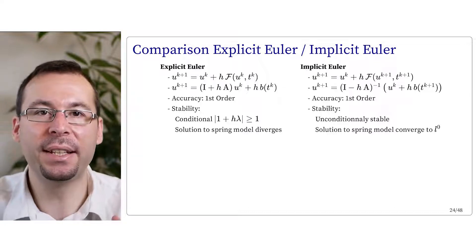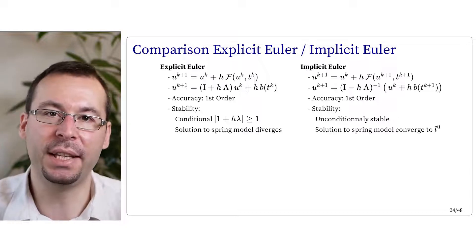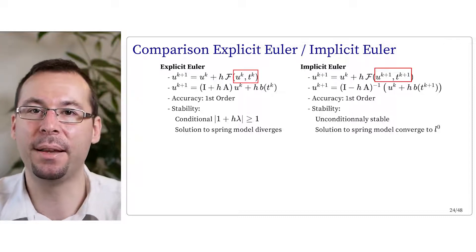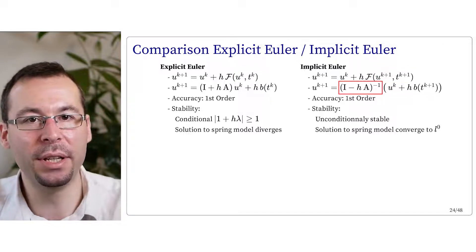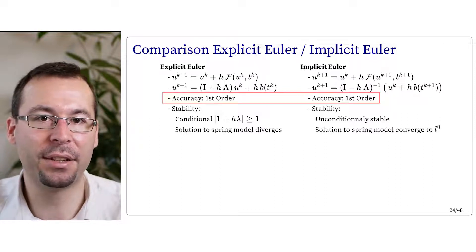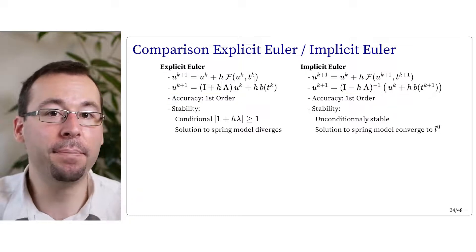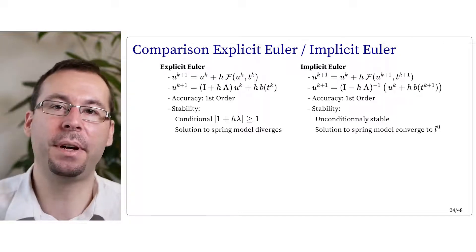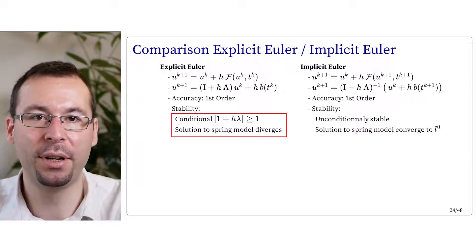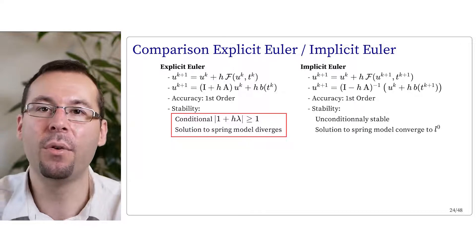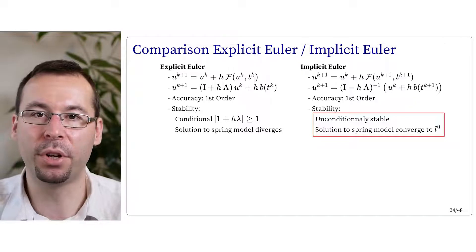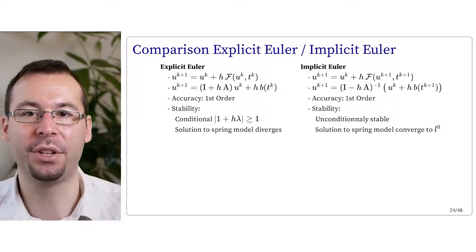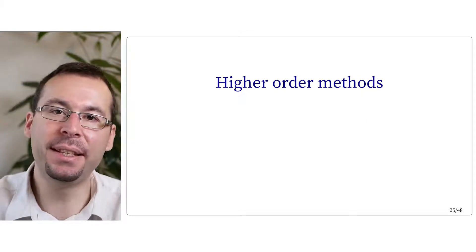Here is a summary comparing explicit and implicit Euler. Both use the same time discretization, but explicit Euler evaluates f at t_k while implicit Euler evaluates it at t_{k+1}, requiring solving a linear system. The accuracy of both methods is the same — they are both first order, so neither is very precise. The stability, however, is very different: explicit Euler is only conditionally stable and always diverges on a spring simulation, while implicit Euler is unconditionally stable and always converges on a spring simulation to L₀, even without friction.